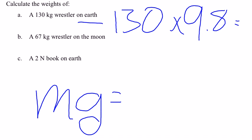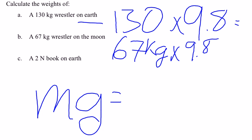What about on the Moon? Well, we're going to do 67 kilograms times 9.8. But on the Moon, the gravity is not 9.8, but 9.8 divided by 6 because it's one-sixth the gravity on Earth. So 67 times 9.8 divided by 6. You'll get your answer there.